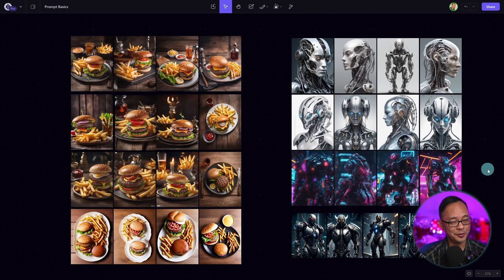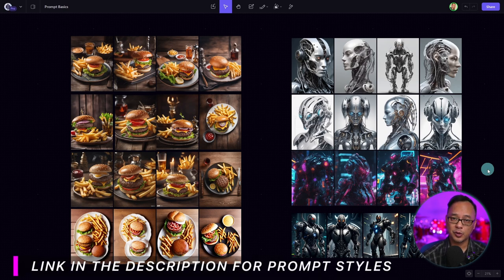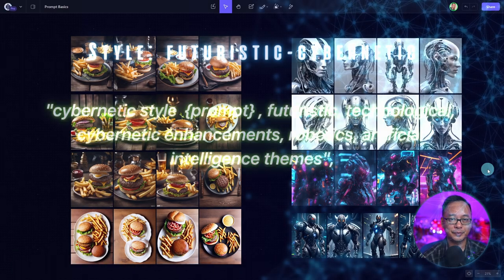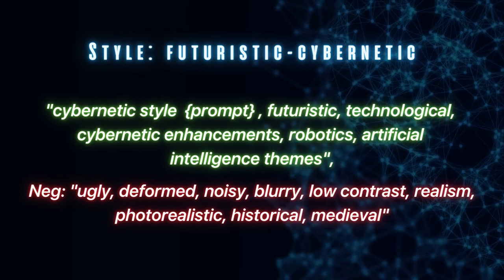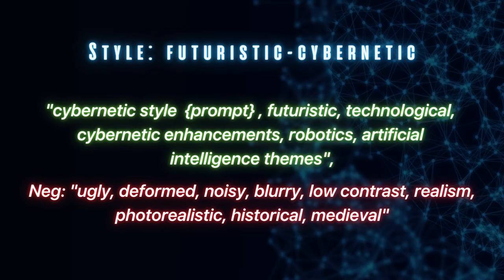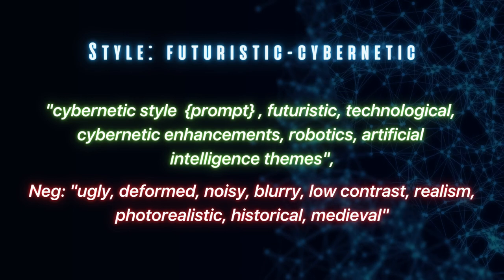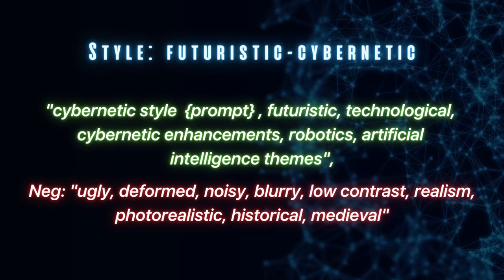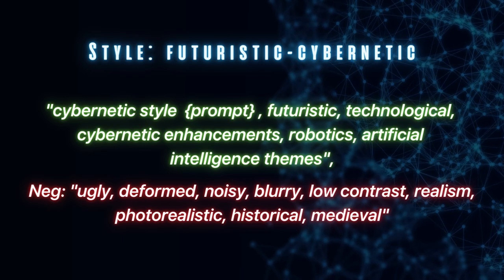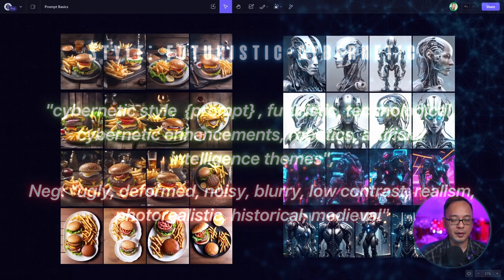Because I appreciate you all, I'm going to include a Google Doc in the description below with a whole long list of different styles you can play around with. You would copy the prompt from the start of the quotes — you don't need to keep the quotations. And where it says "neg colon," those are the negative prompts to put in the exclude from image area.